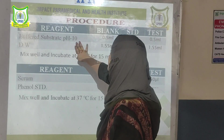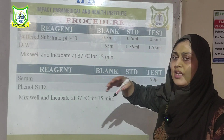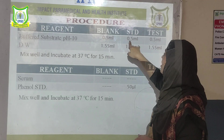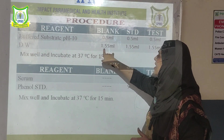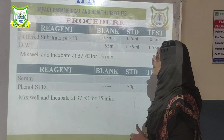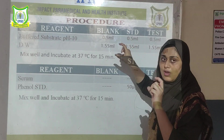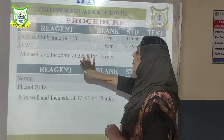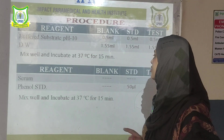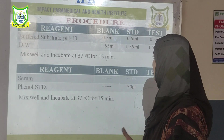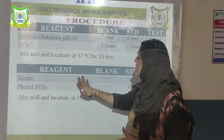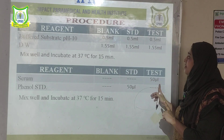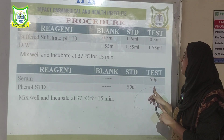First add buffered substrate, which contains disodium phenyl phosphate, at 0.5 ml into blank, standard, and test equally. Then add distilled water — 1.55 ml — to keep the volume equal across all tubes. Mix properly and maintain at 37 degrees centigrade. Then add 50 microlitres of serum into the test tube only — serum does not go into blank or standard.